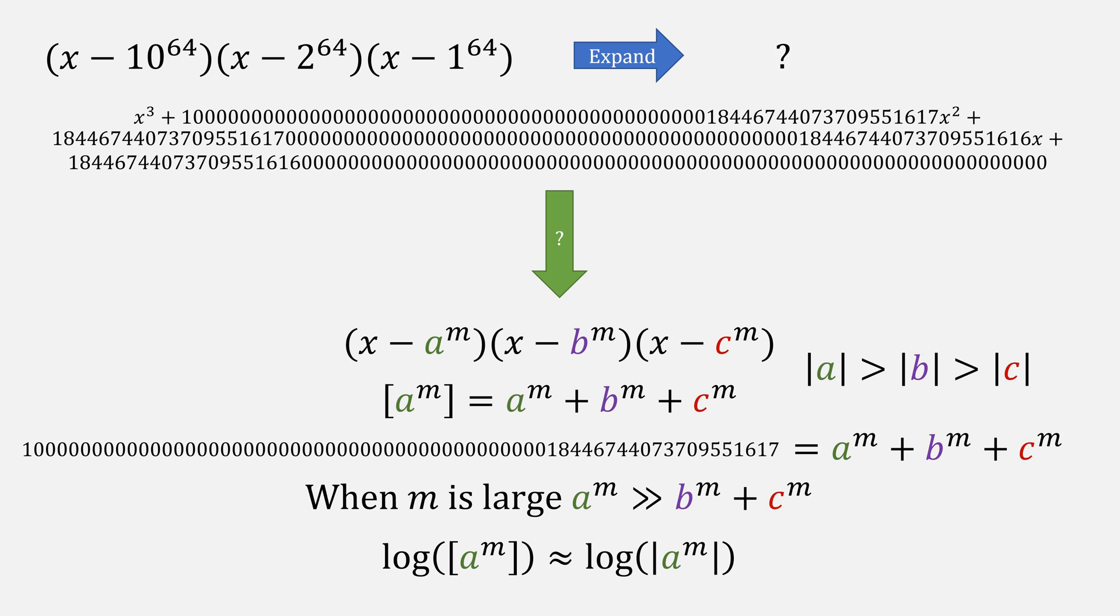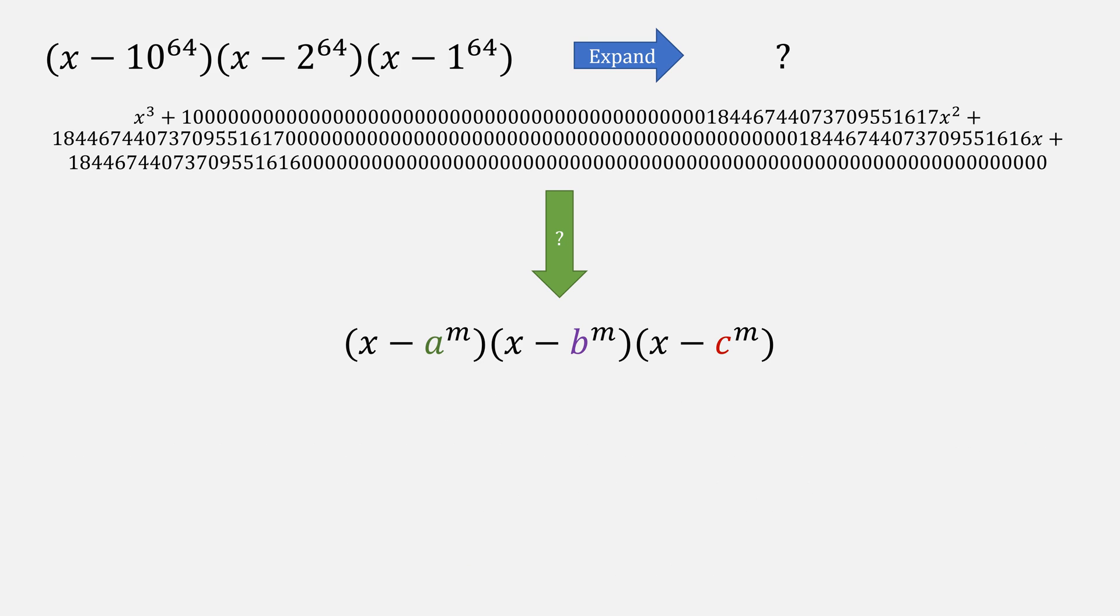And it turns out that the log of bracket a^m is approximately equal to the log of the absolute value of a^m. We can extract the m on the right hand side using properties of logs, in this case specifically that log(x^y) is exactly equal to y·log(x).